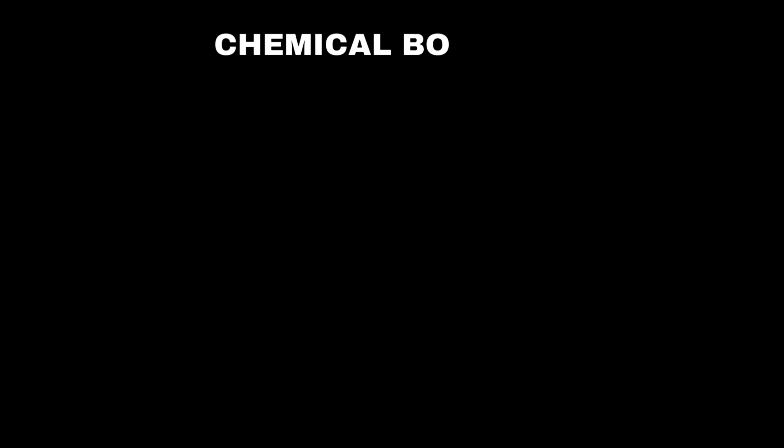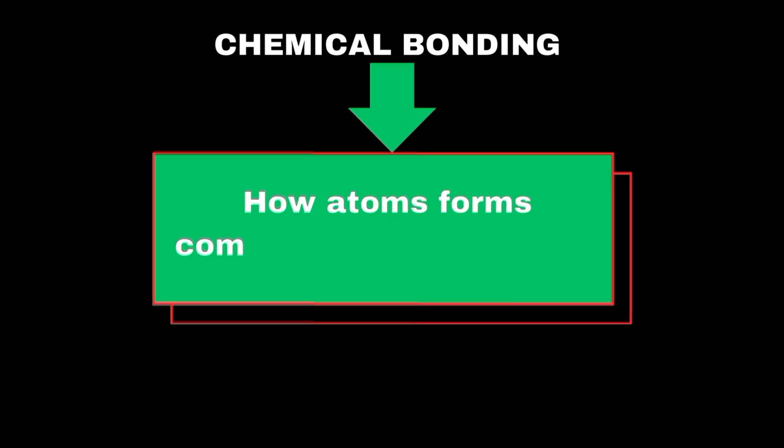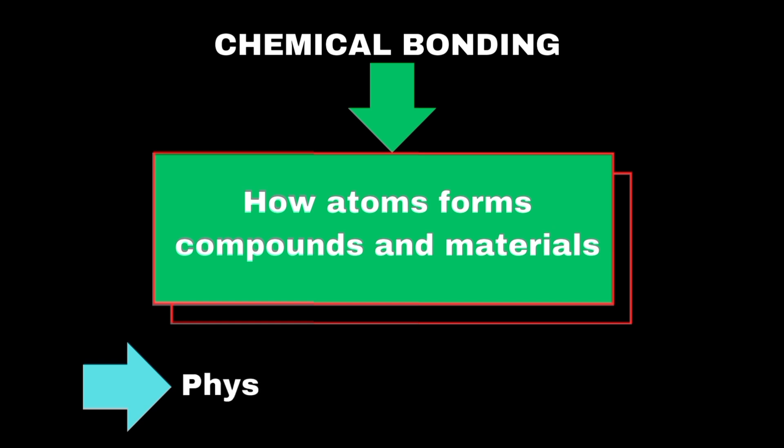Chemical bonding in inorganic chemistry explains how atoms come together to form compounds and materials. The type of bond formed between atoms determines the physical and chemical properties of the substance, such as its strength, melting point, electrical conductivity, and reactivity.